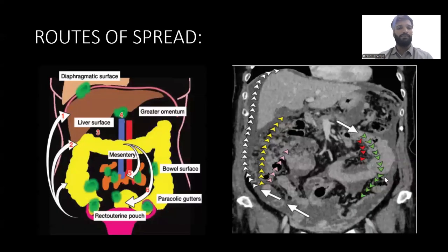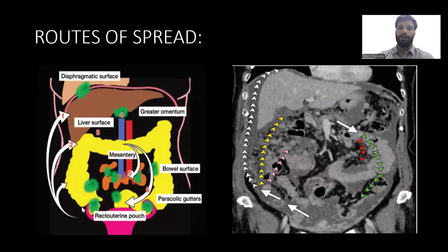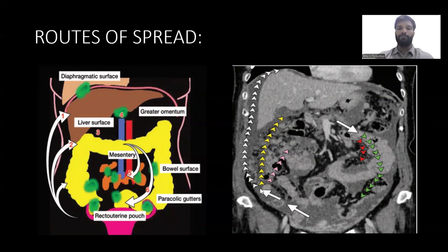When we look at the routes of spread, we have the diaphragmatic surface, the liver surface. It spreads through omental and lymphatogenous spread, blood spread — spreading to the liver surface, mesentery, rectal uterine pouch, paracolic gutters, bowel surface, and omental deposits, including the greater omentum. It can also form necrotic lymph nodes or deposits, or metastases in the parenchymal liver.